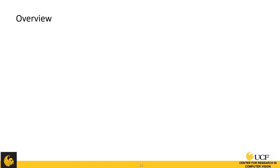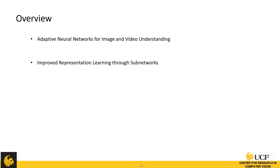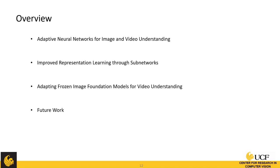In this dissertation, we try to improve the efficiency and effectiveness of representation learning by addressing these problems. First, we propose adaptive networks where one network can run at different resource budgets for image and video understanding. Then we propose a new regularization method to improve robustness and generalization. Third, we propose a new method to adapt image foundation models for video understanding. Finally, I will talk about some future works.